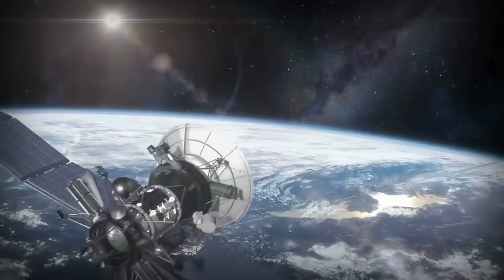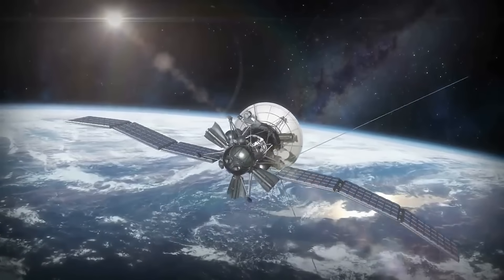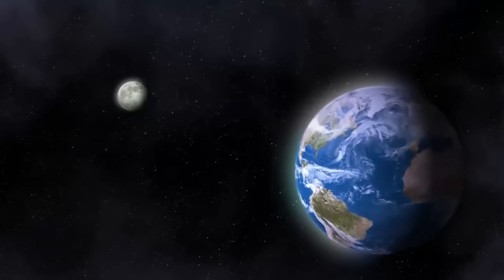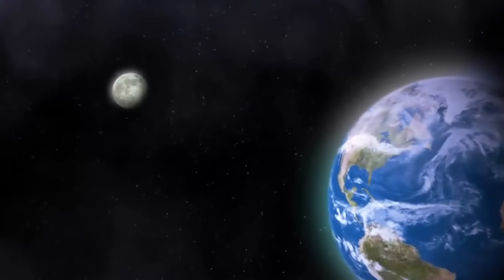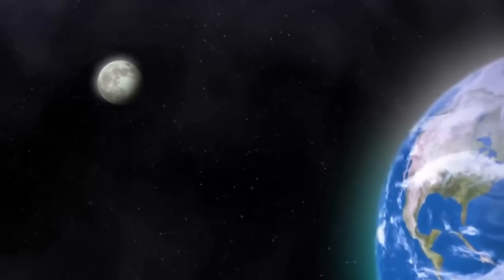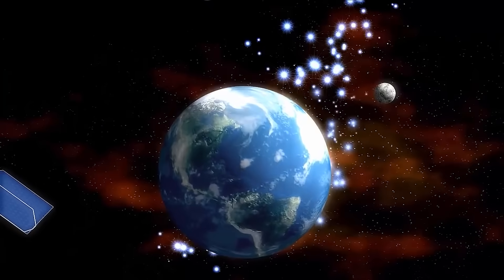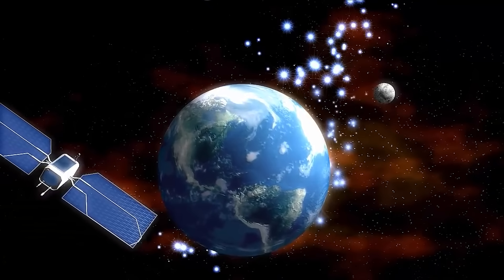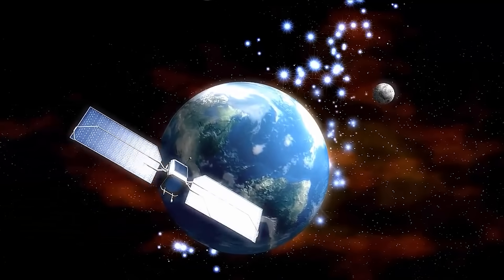A satellite is any object that orbits around a larger celestial body. Artificial satellites, the focus of our discussion, are man-made objects placed into orbit around Earth. These artificial marvels have become pivotal in modern space exploration and communication.